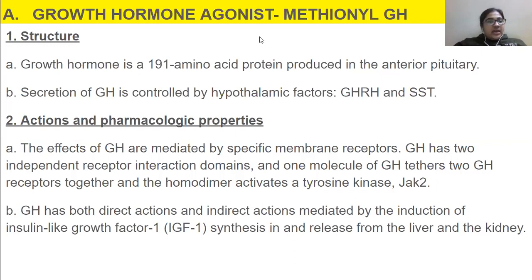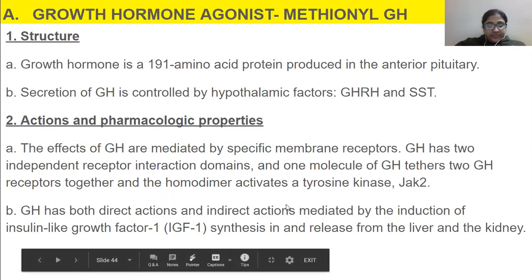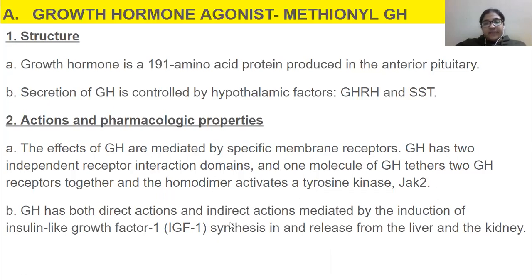Growth hormone is a 191 amino acid protein produced in the anterior pituitary. Secretion of GH is controlled by hypothalamic factors. The effects of growth hormone are mediated by a specific membrane receptor. GH has two independent receptor interaction domains, and one molecule of GH binds two GH receptors together. This homodimer activates a tyrosine kinase, JAK2, through the JAK-STAT mechanism.